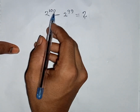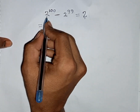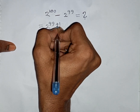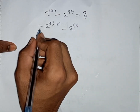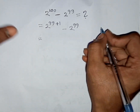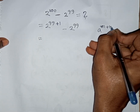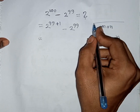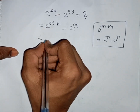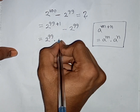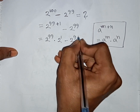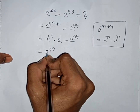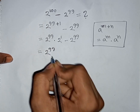How to simplify 2¹⁰⁰ - 2⁹⁹? We can write 2¹⁰⁰ as 2⁹⁹⁺¹, then minus 2⁹⁹. Applying the exponential rule a^(m+n) = aᵐ × aⁿ, this becomes 2⁹⁹ × 2¹ minus 2⁹⁹. We see 2⁹⁹ is common, so we take out 2⁹⁹ as the common factor.